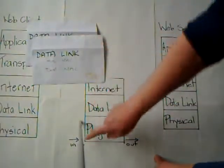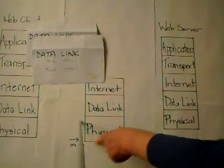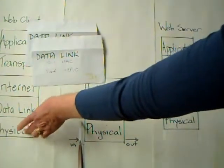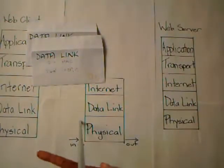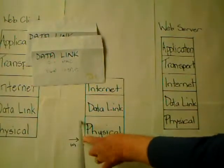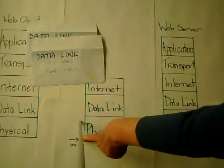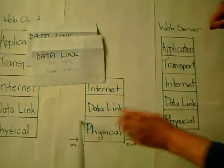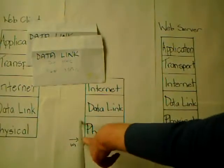The destination MAC address is not going to be the web server's address. It's actually going to be the incoming interface of the router. Once it leaves the data link layer it goes to the physical layer, gets changed into bits, the bits travel across the physical media, and arrive at the router through the incoming interface. So the destination MAC address is whatever is on that incoming interface on the router.